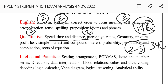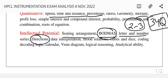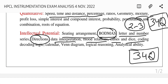There were a total of 34 questions from quantitative aptitude. For intellectual potential, topics included seating arrangement, BODMAS, letter and number series, direction, data interpretation, blood relations, cubes, coding-decoding, logic, calendar, Venn diagram, and logical reasoning and analytical ability. There were 34 questions in total at a moderate to difficult level.